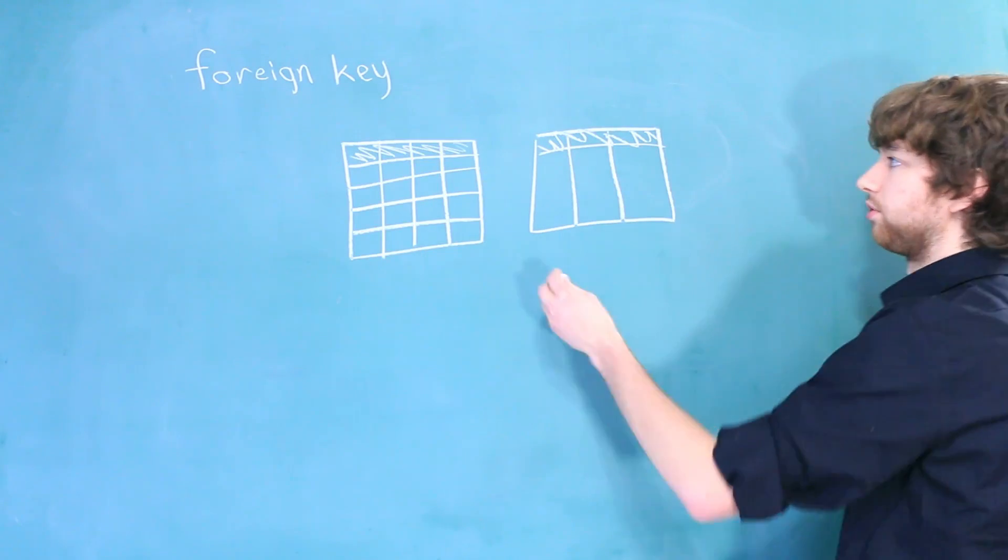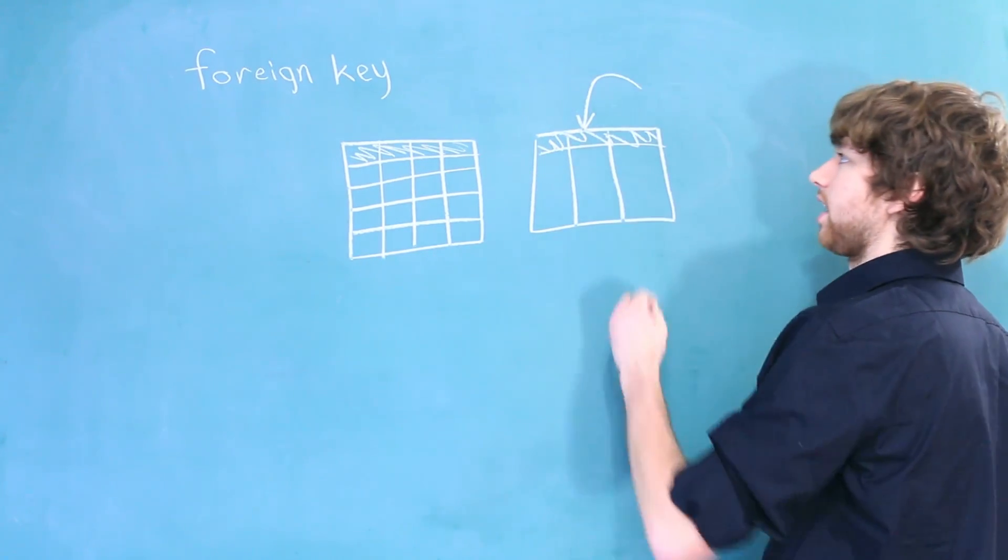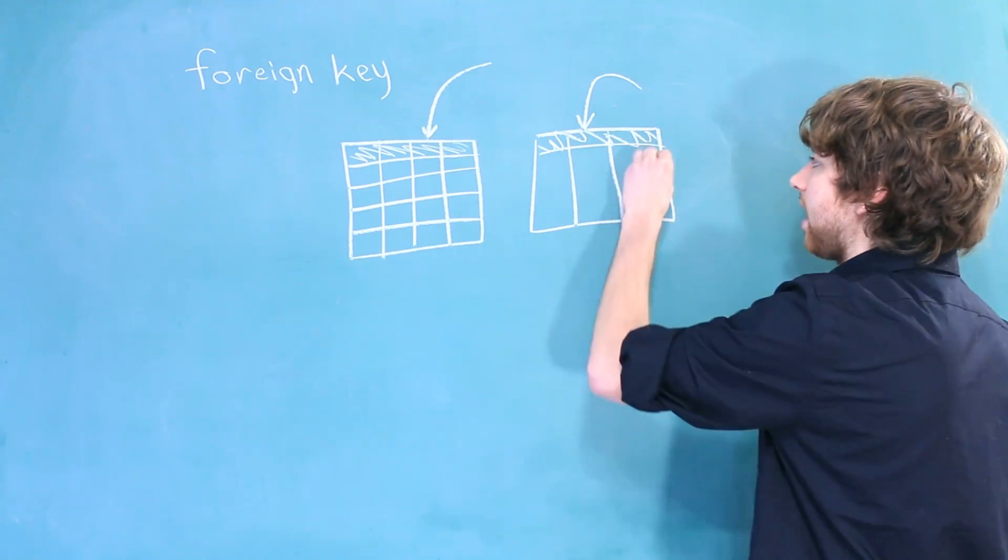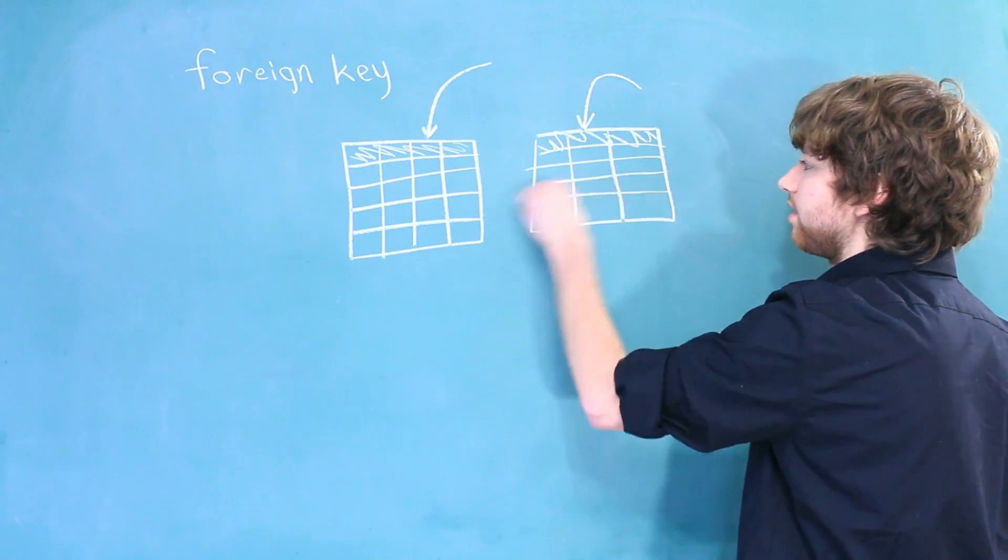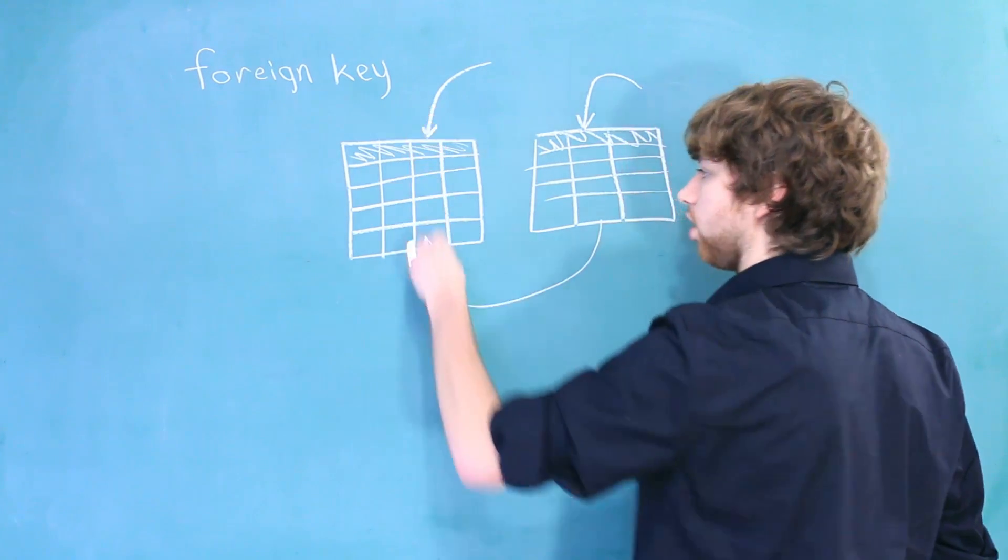Here we have two tables. And let's say we label this column as a foreign key, and we say that it references this column.